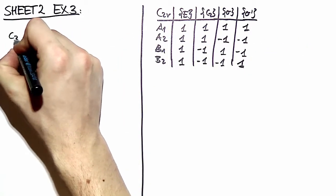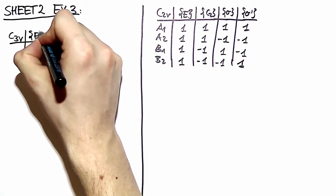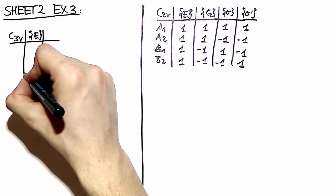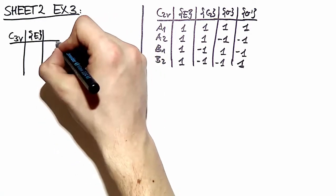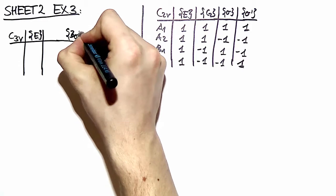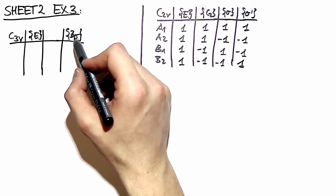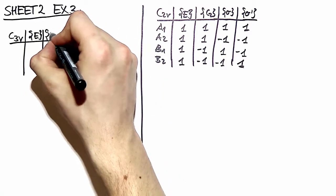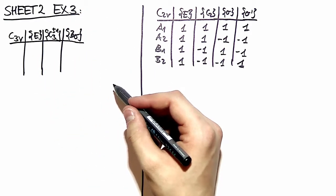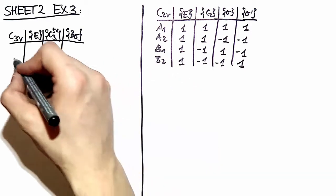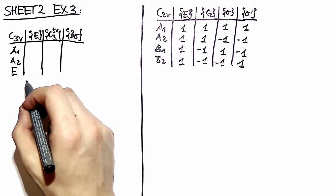Let's continue with C3V. In C3V we can rotate our reflection planes by one third, and this is actually an element of the group. Therefore our three reflections must be in the same conjugacy class. The reflections contain a handedness-changing element; therefore both rotations C3 plus and minus one must be in the same conjugacy class as well. That determines the number of irreducible representations — namely three of them — we call them A1, A2, and E.